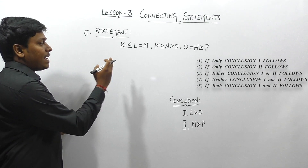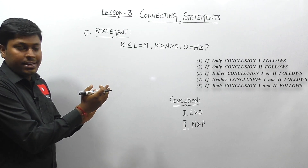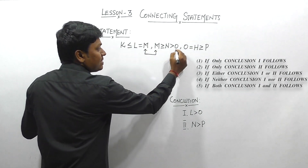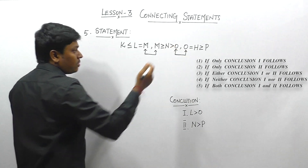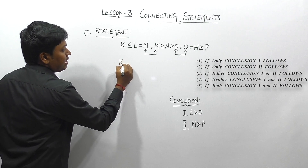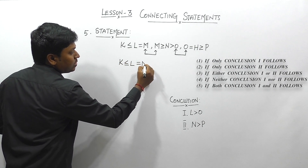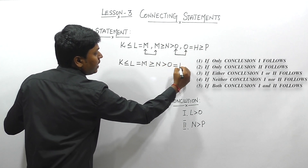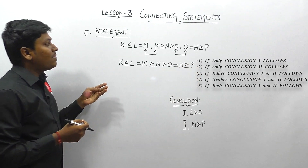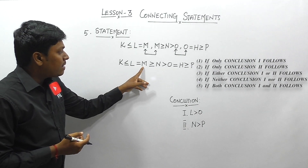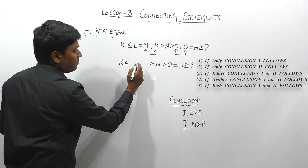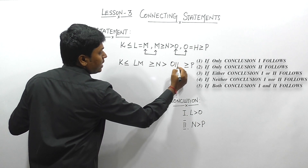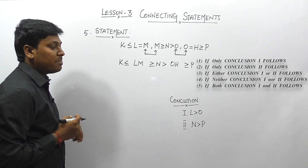Question 5 has three statements: K ≤ L = M, M ≥ N > O, O = H ≥ P. Statement 1 ends at M and statement 2 starts at M; statement 2 ends at O and statement 3 starts at O. The single expression is: K ≤ L = M ≥ N > O = H ≥ P. L and M are equal (LM); O and H are equal (OH).